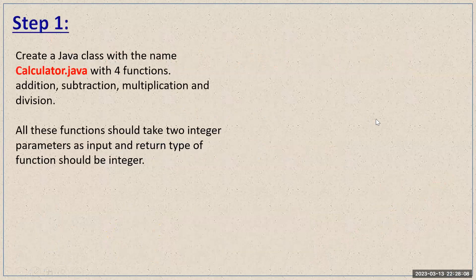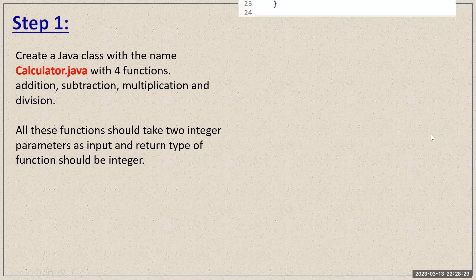In the first assignment, you have to create a Java class with the name Calculator.java and you have to create four functions: addition, subtraction, multiplication, and division. All these functions should take two integer parameters as input, and the return type of all these functions should also be integer.